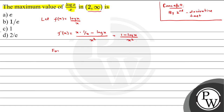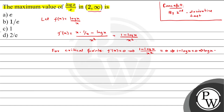Next, we find the critical points. For critical points, the first derivative f'(x) = 0. This implies (1 - log x) / x² = 0, so cross-multiplying: 1 - log x = 0, which implies log x = 1, which implies x = e.